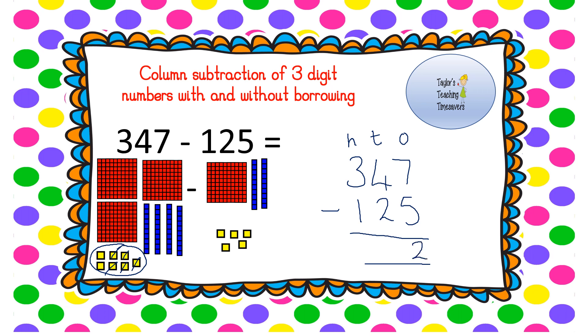Now we've got 40 take away 20. Remember if you understand that place value, it is okay in your head for you to do 4 take away 2. So 40 take away 20 leaves us with 20. And we move on to our hundreds. 300 take away 100 leaves us with 200. So 347 take away 125 is 222.